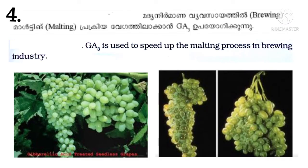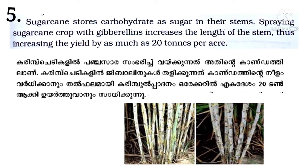4. In the brewing industry, GA3 is used to speed up the malting process. 5. Sugarcane stores carbohydrates as sugar in their stems. Spraying sugarcane crop with gibberellins increases the length of the stem, thus increasing the yield by as much as 20 tons per acre.